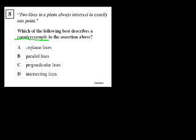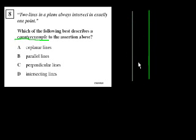Can I think of two lines in a plane that always intersect in exactly one point? Well, what if they're parallel? What if I have that line and that line? They're never going to intersect with each other. They're parallel. That's the definition of parallel lines.